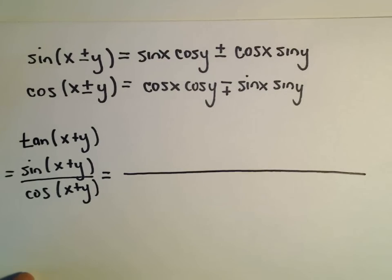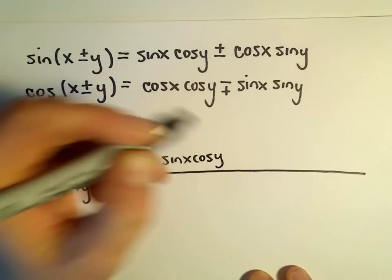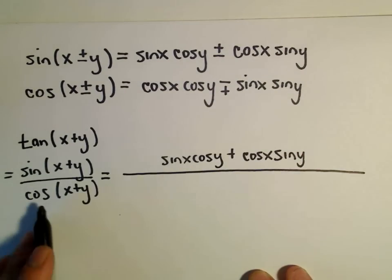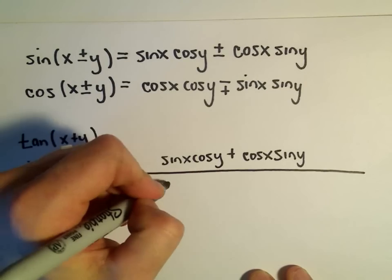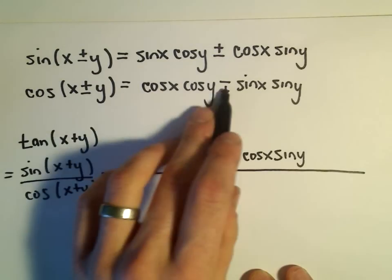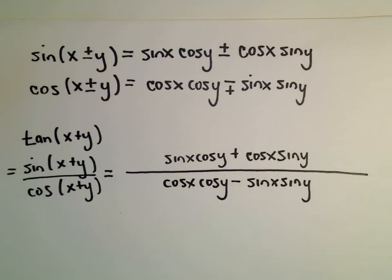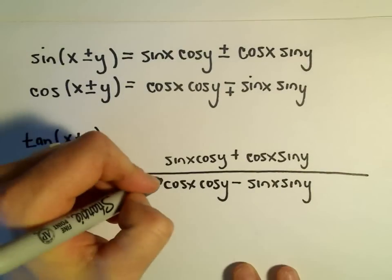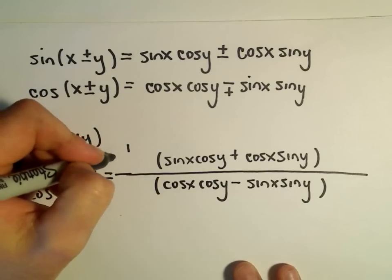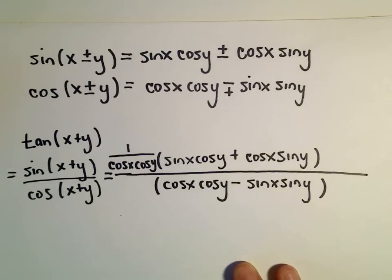So sine of x plus y is sine x times cosine y plus cosine x times sine y, and then cosine of x plus y will be cosine x cosine y — and if there's a plus, remember here we use a minus sign — and then we have sine x sine y. Usually they'll simplify this, and the way that you typically see it simplified is we're going to multiply the numerator by one over cosine x cosine y.